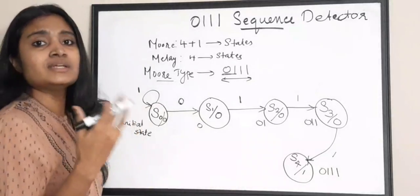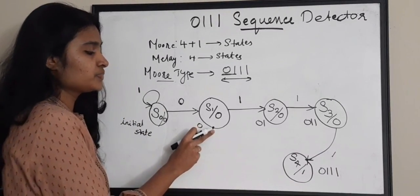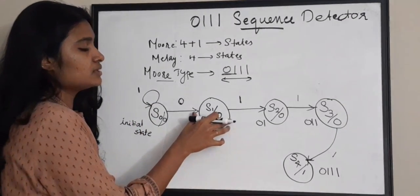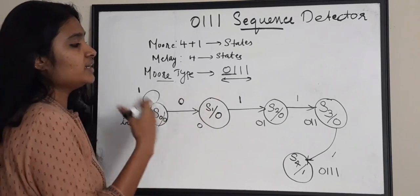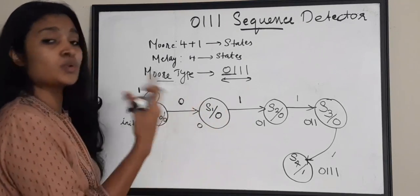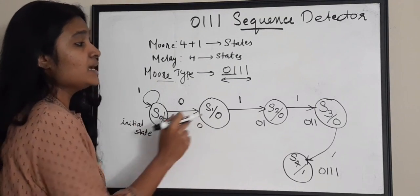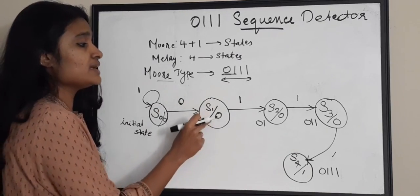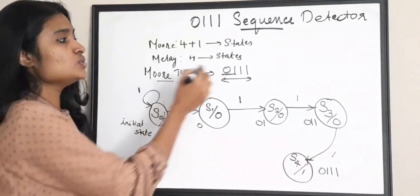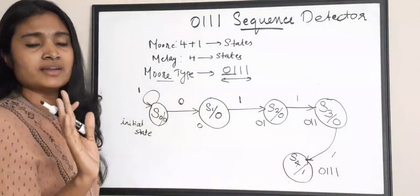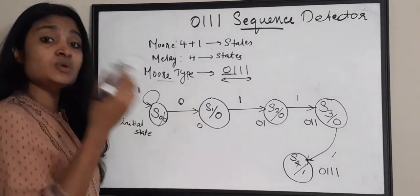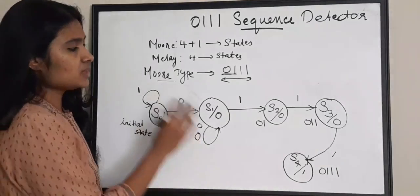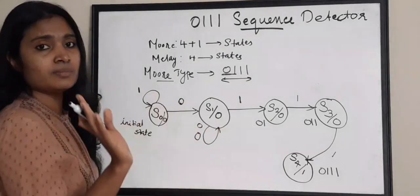For S0 both cases are complete. For S1, we have taken the case of receiving a 1, which gives progress. But what will happen if you receive a 0 in S1? Since S1 is already holding a 0, and there is only one zero relevant in the sequence, if you receive a 0 again you will loop back to that S1 state itself. Both cases for S1 are now complete.